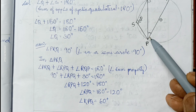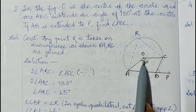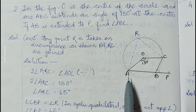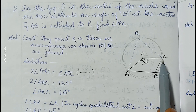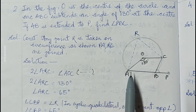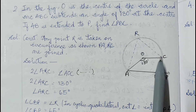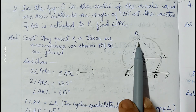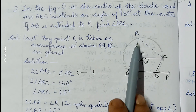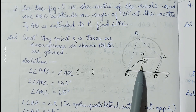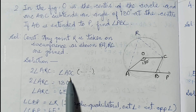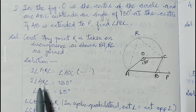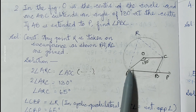Question number two: O is the center of the circle and arc ABC subtends an angle of 130 degrees at the center. AB is extended till P; we have to find angle PBC. Any point R is taken on the circumference and RA and RC are joined. The angle at the center is double the angle at the circumference, so twice angle ARC equals angle AOC, which is 130 degrees. Therefore angle ARC equals 65 degrees.